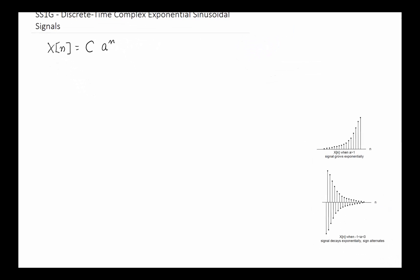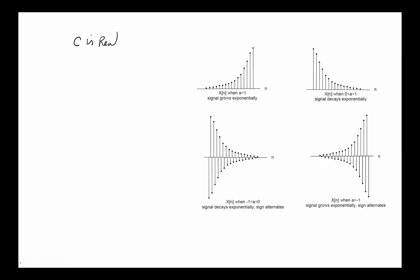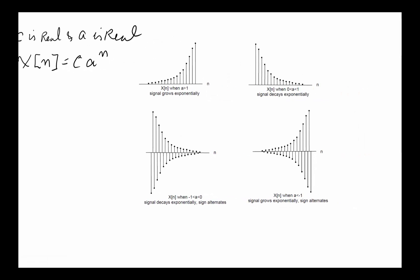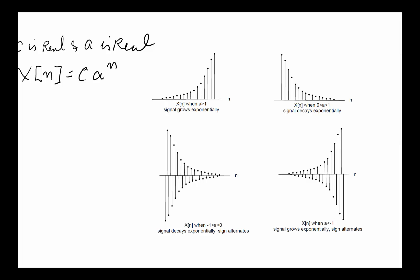Depending on whether C is complex or real, or a is complex or real, we get a whole bunch of different answers, much like we did for continuous time. Let's take a look at the discrete-time case as well. If C is real and a is real, this is the most straightforward. X of n equals C times a to the power of n. If a is larger than 1, every time n grows it will grow — that's exponential growth.